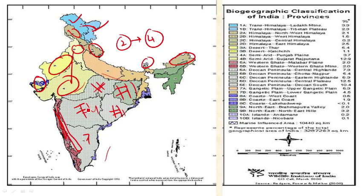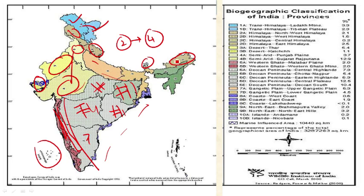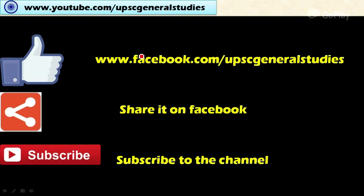The Gangetic Plains zone is divided into two provinces: the Upper Gangetic Plains covering Uttar Pradesh and surrounding areas, and the Lower Gangetic Plains covering Bihar, parts of West Bengal, and Odisha. The Coastal zone has three provinces: Western Coast, Eastern Coast, and the coast of Lakshadweep. Northeastern India is divided into two provinces: the Northeast Brahmaputra Valley and the Northeastern Hills. The Islands zone covers the Andaman-Nicobar Islands and Lakshadweep — totalling 25 biogeographical provinces.